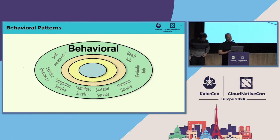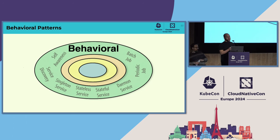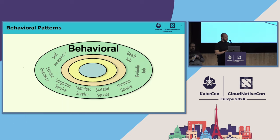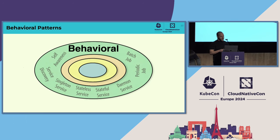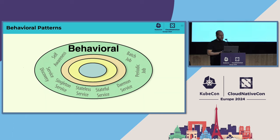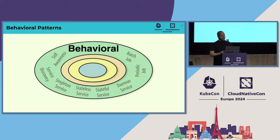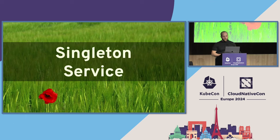Foundational patterns help you create containers that are good cloud-native citizens. Structural patterns help you combine containers in different formats within the pod, with init containers, sidecars, etc. Behavioral patterns dictate how the pod communicates with the Kubernetes platform — typically around lifecycle, whether your application runs as a long-running process, stateful or stateless, and also about directing traffic or metadata to your application. We'll look at the singleton pattern.